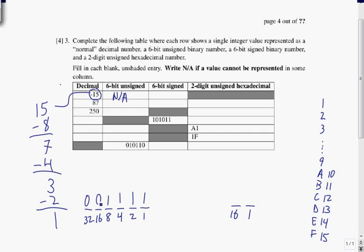That's the absolute value — the magnitude of negative 15, not negative 15 itself. Now we flip the bits: 110000, and add 1 to get the 2's complement. That gives us 110001. So our 6-bit signed value for negative 15 is 110001.